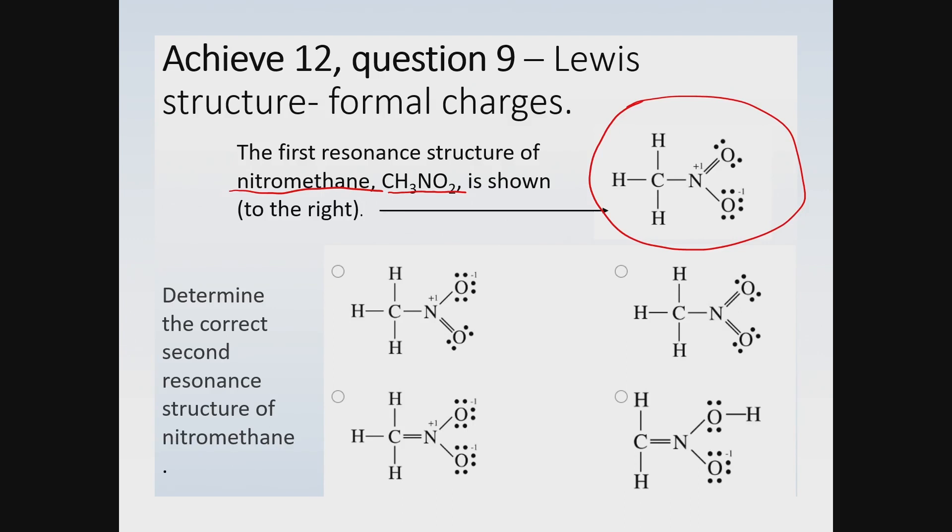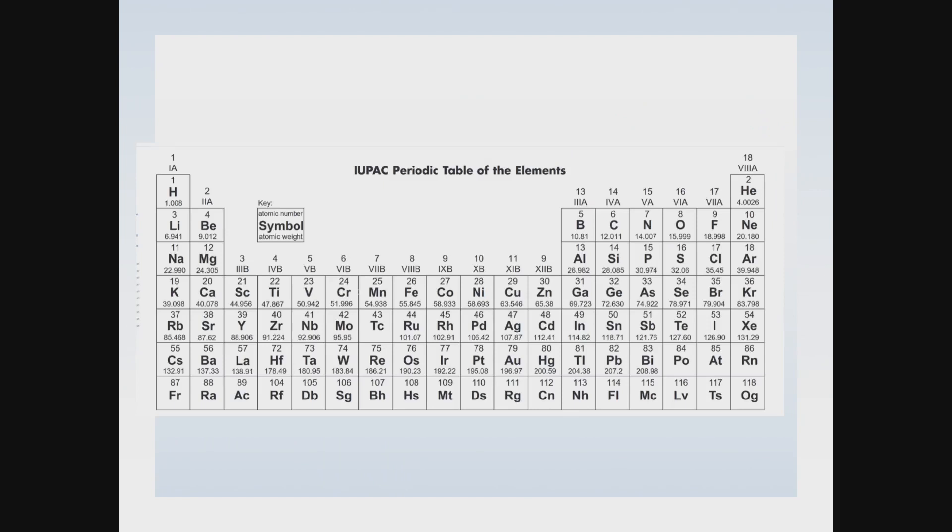If you look at all these structures, you can see that there are four elements. There are hydrogens, and they should have duets. There is carbon, nitrogen, and oxygen. Those last three elements—let me bring it up in the periodic table—those are particular period two elements that must have exactly an octet.